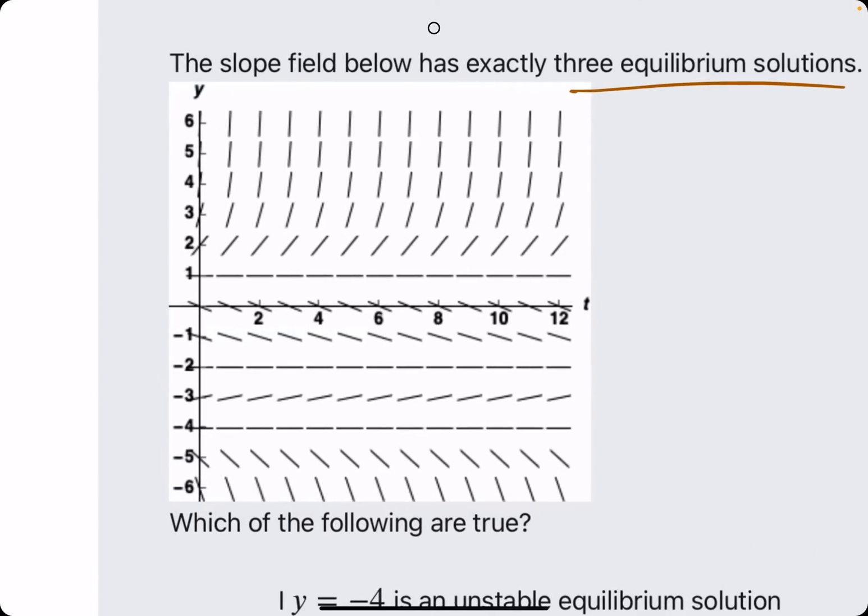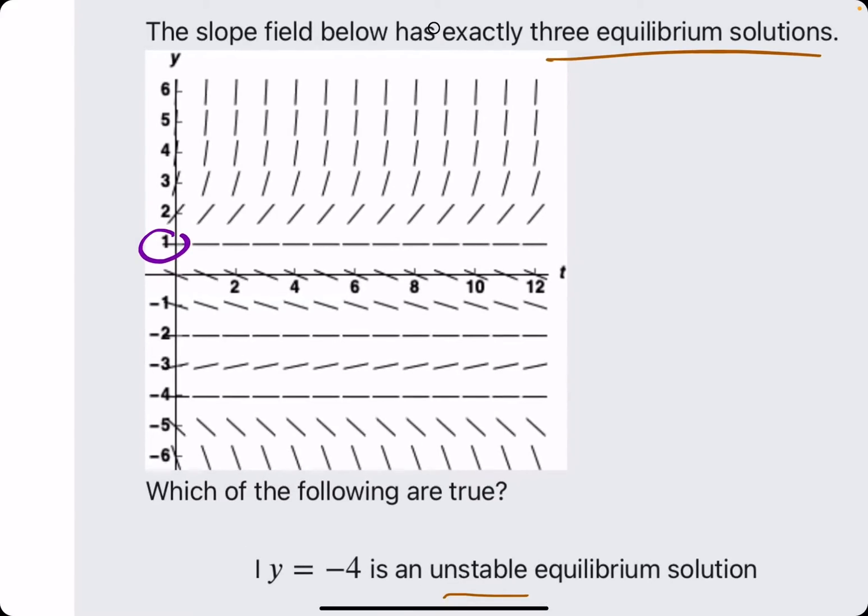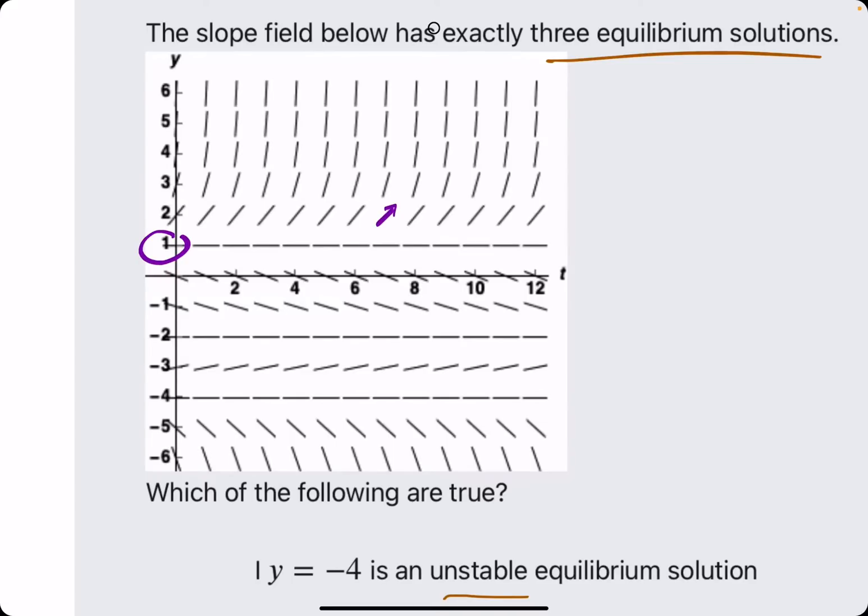It may help first to find our equilibrium solutions. So 1 is our first one, and analyze whether it's stable or unstable. So go ahead and label all of them stable or unstable first. Alright, so at 1, from left to right, we see these lines are already going away from 1. So already, 1 is unstable.